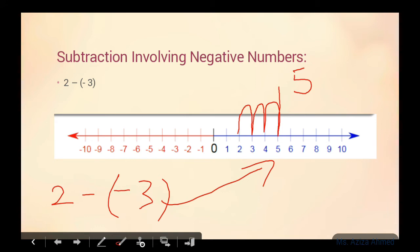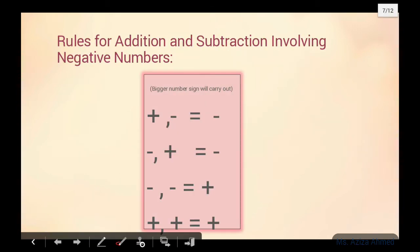Humne number line mein dekha ke jab negative numbers hon, toh subtraction backward ki taraf nahi jaata balke aage ki taraf jaata hai — forward hota hai. Yeh humne number line se sirf samjhane ke liye kiya, ke what does it really mean. Ab mein aapko kuch rules bataungi jin rules ko aap follow karenge aur phir add aur subtract karenge negative numbers ko — woh bahut easy aur within seconds hone wala kaam hai. Ye rules bhi aapko yad ho jayenge jab aap ye video dekh lenge aur practically assignment question karenge. Rules for addition and subtraction involving negative numbers.